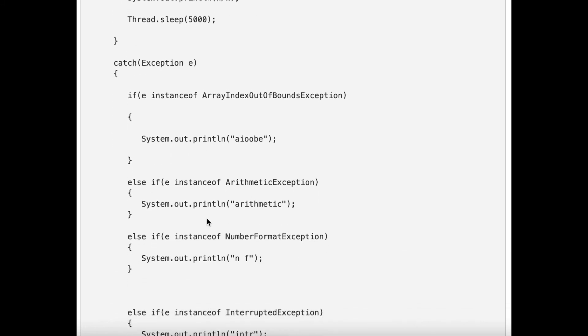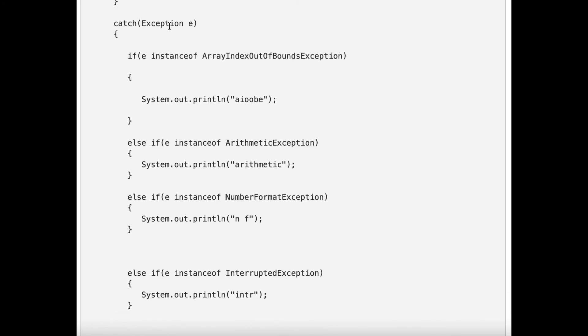Then we are catching exception. If there will be an exception, e instanceof ArrayIndexOutOfBoundsException, it will give you the array index out of bound exception. If the instance is ArithmeticException, means divide by zero, then it will give system.out.println arithmetic.